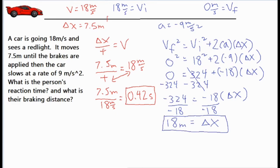So we got a final answer of 18 meters. Our delta x for the second portion of the car's movement is 18 meters. It moves 7.5 meters for the initial portion, and then while the brakes were being applied, this chunk over here, it moved a total of 18 meters.